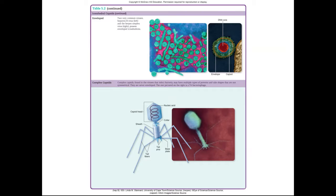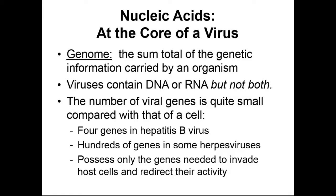If we look at the nucleic acids, the genetic information in the core of our viruses, they make up the genome of the virus, the sum total of all genetic information in the organism. Our viruses will have DNA in the deoxyribonucleic form or ribonucleic acid, RNA form. But they don't have both at the same time. It's one or the other.